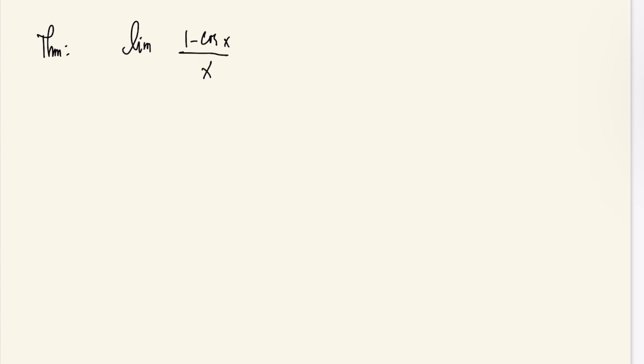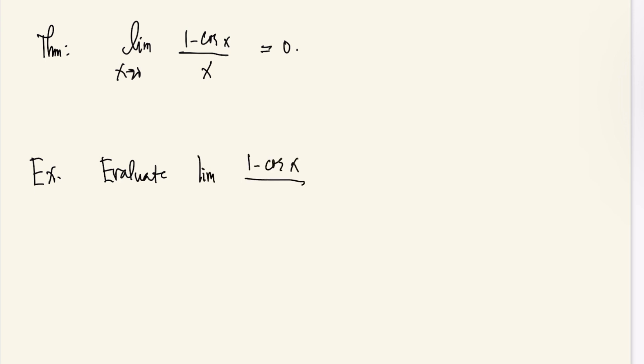We have a theorem: the limit of 1 minus cosine x all over x as x approaches 0 is 0. Let's try an example — evaluate the limit of 1 minus cosine x all over sine x as x approaches 0.